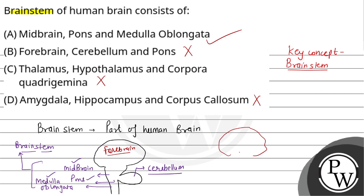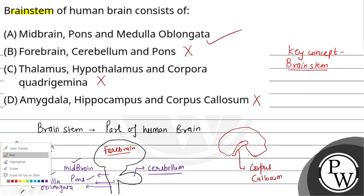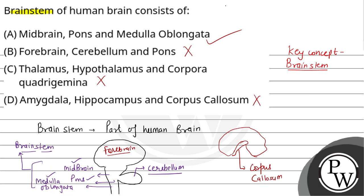The forebrain has two hemispheres, and the structure connecting these two hemispheres is called the corpus callosum. The amygdala and hippocampus are located in the forebrain. So the correct answer is only Option A. Hope you understood it well. Best of luck!